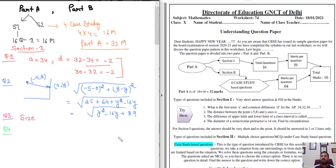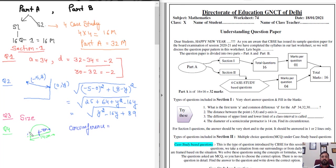Question 4: The diameter of a semicircle is 14 cm. The radius is therefore 7 cm. We need to find the circumference of the semicircle. The formula is 2πr = 2 × (22/7) × 7 = 44 cm. So the circumference is 44 cm. This concludes Section 1.